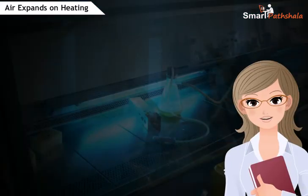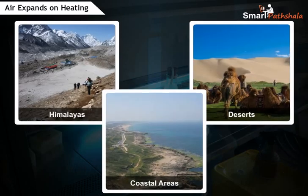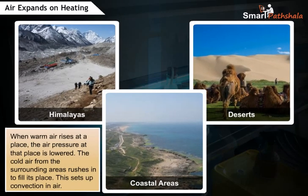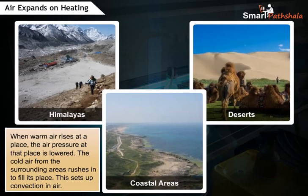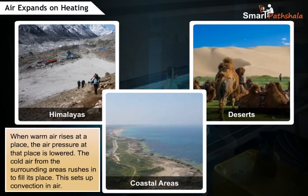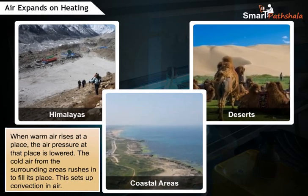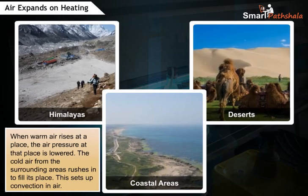Now let us analyze these observations and try to understand why pressure differences are created in nature. In nature, there are several situations where warm air rises at a place and the air pressure at that place is lowered. The cold air from the surrounding areas rushes in to fill its place. This sets up convection in air.